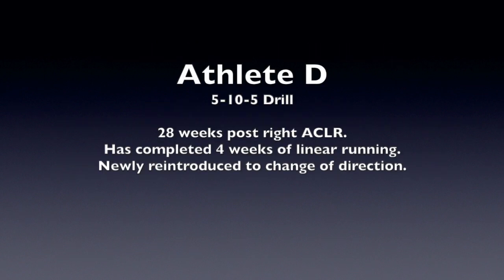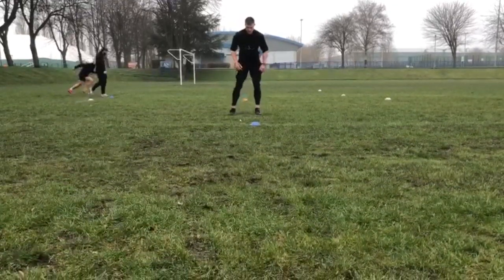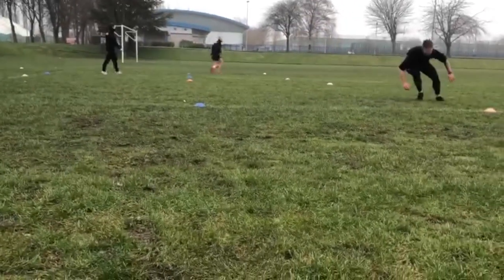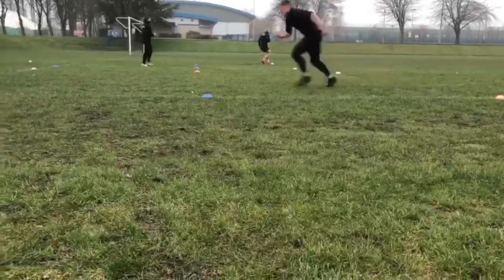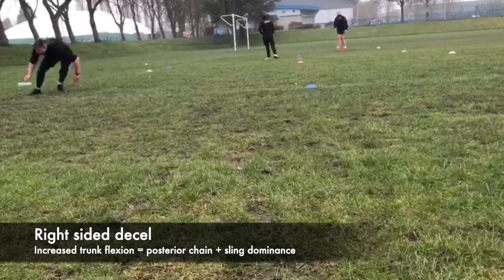Next is Athlete D who is 28 weeks post ACL reconstruction. He has just completed four weeks of linear base running and has been newly introduced to change of direction. During the 5-10-5 drill you can see that the athlete struggles to maintain upright trunk posture and utilises a more posterior chain dominant movement strategy.